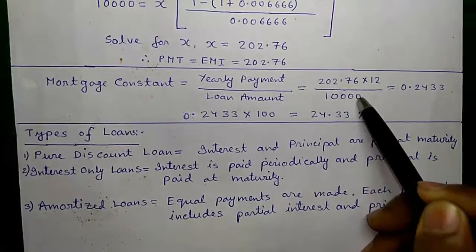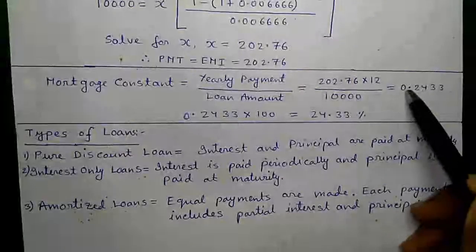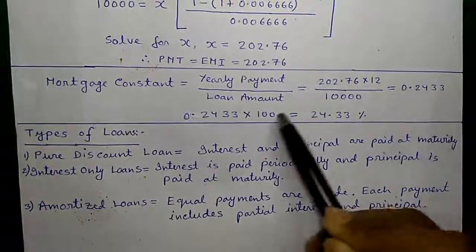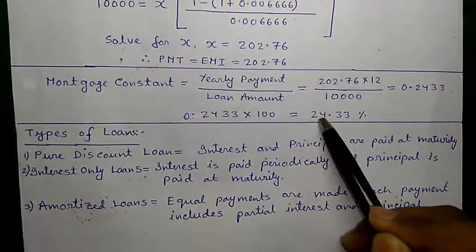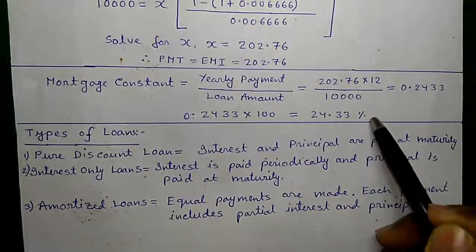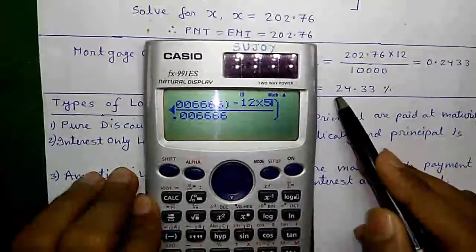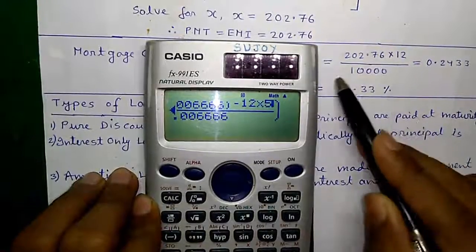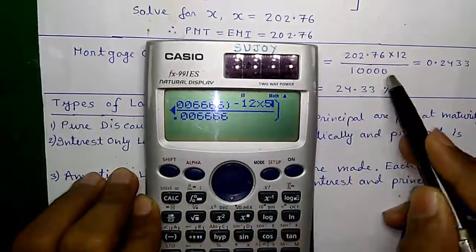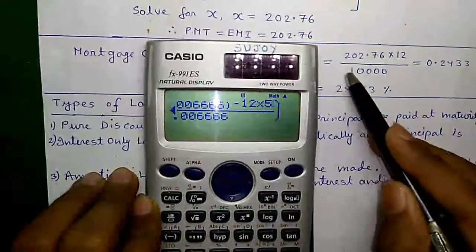Mortgage constant equals yearly payment divided by loan amount, which is 202.76 times 12 divided by 10,000 equals 0.2433 times 100 equals 24.33%. So although the bank is giving you the loan at 8% per annum interest rate, the bank is getting 24.33% per annum in return against the loan amount.